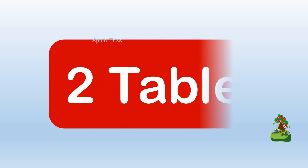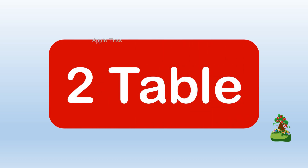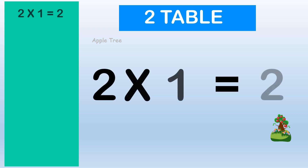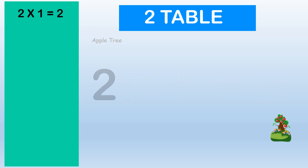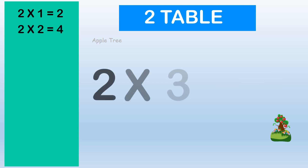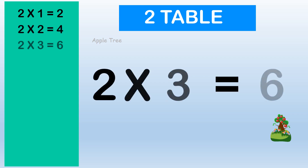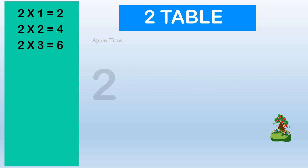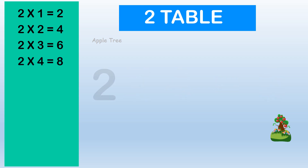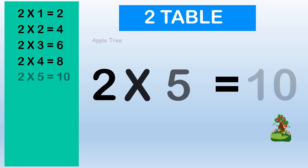Table for 2. 2 × 1 = 2, 2 × 2 = 4, 2 × 3 = 6, 2 × 4 = 8, 2 × 5 = 10.